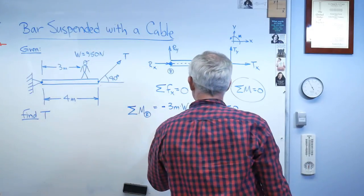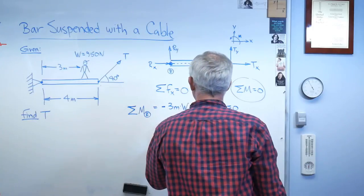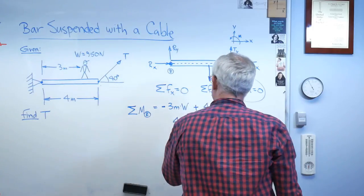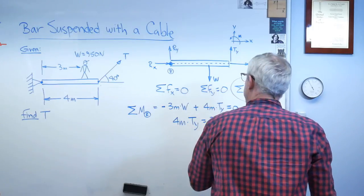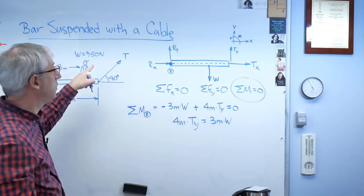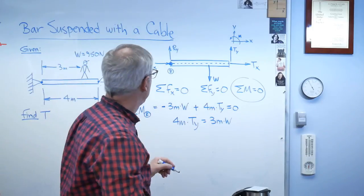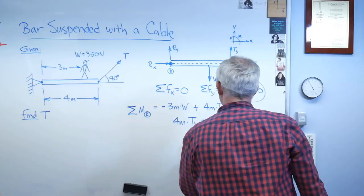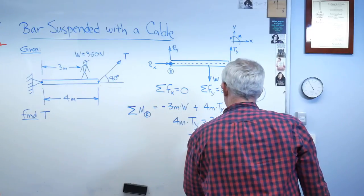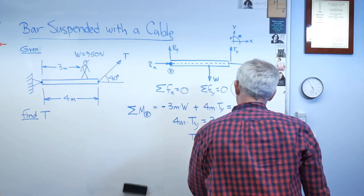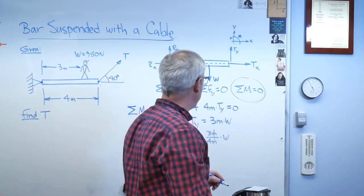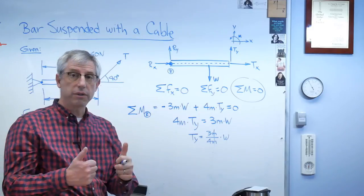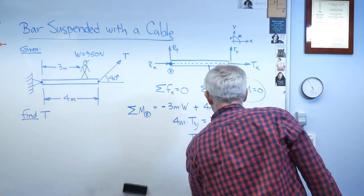So if I solve this, let's do it in two steps here. 4 meters times TY is going to give you 3 meters times W. And remember, we know W. That's 950 Newtons. That's given. So TY is going to be 3 meters over 4 meters times W. And the meters cancel out. That's going to have units of force, Newtons, and so is that. So we're good there, too. So there's the equation we've got to solve. The only problem we've got here is that I don't need to know the vertical component of T. I need T.